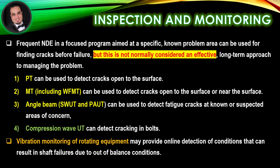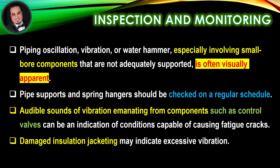Vibration monitoring of rotating equipment may provide online detection of conditions that can result in shaft failures due to out-of-balance conditions. Piping oscillation, vibration, or water hammer — especially involving small bore components that are not adequately supported — is often visually apparent. Pipe supports and spring hangers should be checked on a regular schedule. Audible sounds of vibration emanating from components such as control valves can indicate conditions capable of causing fatigue cracks. Damaged insulation jacketing may also indicate excessive vibration.